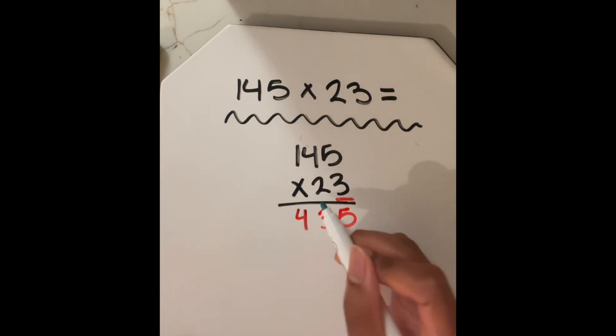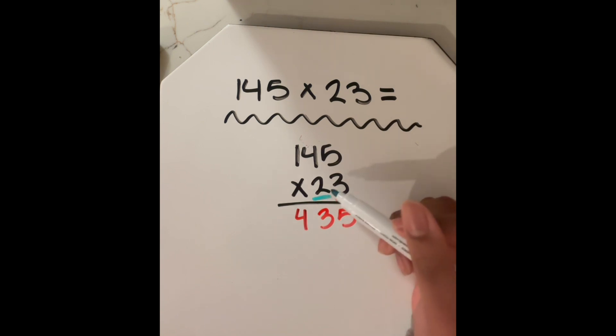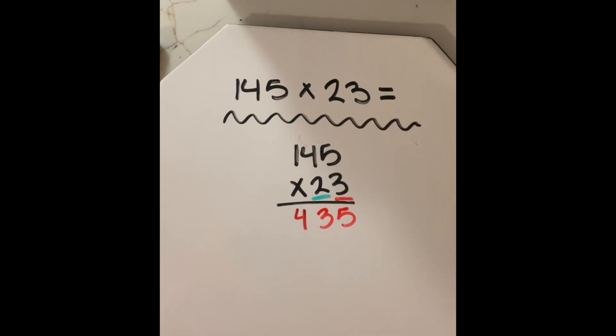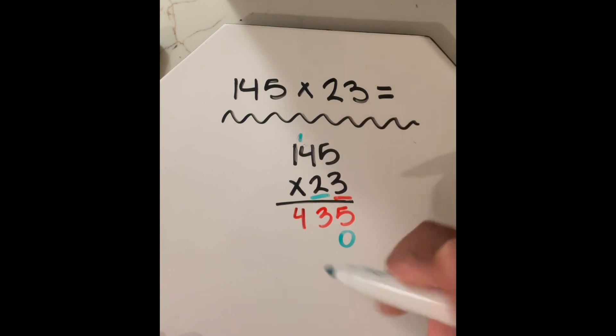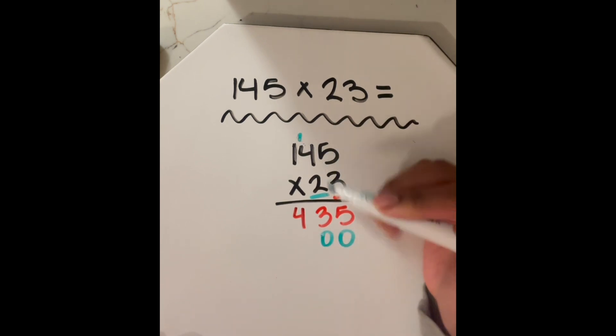So now we can move on to this two. So this two, we're going to follow the same sort of process, but one step we have to take in this process that we didn't do initially is write in a zero. So we have this zero and now we can move forward. We're going to multiply two by five. So two by this number right here, two times five is 10.